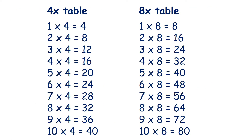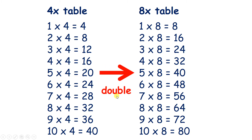Now we have our 4 times table and our 8 times table written out. If we know the 4 times table, we can double to get the 8 times table. And remember, doubling is the same as multiplying by 2. So if you have a number, multiply it by 4 and then multiply it by 2, you've multiplied it by 8, because 4 times 2 is 8.